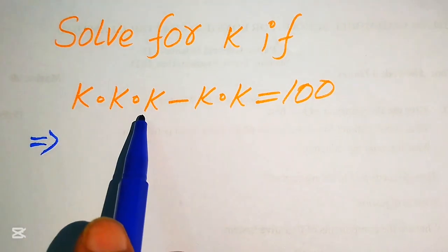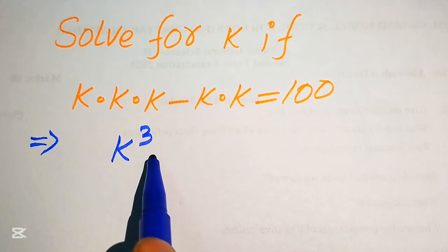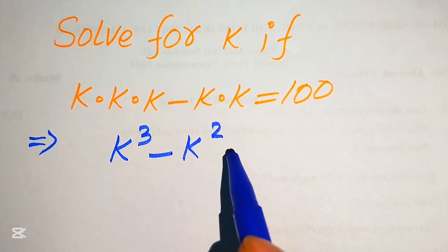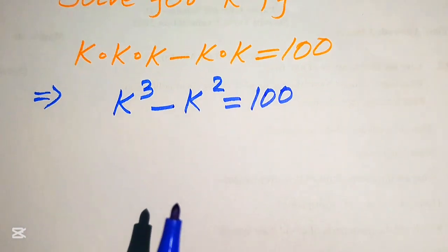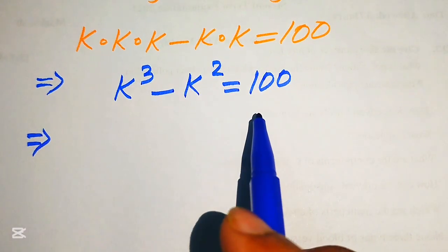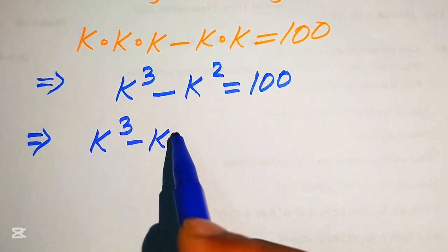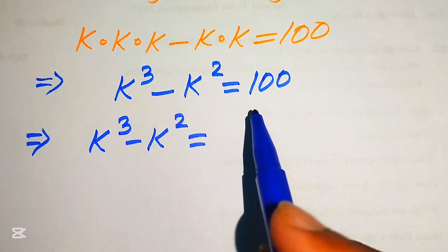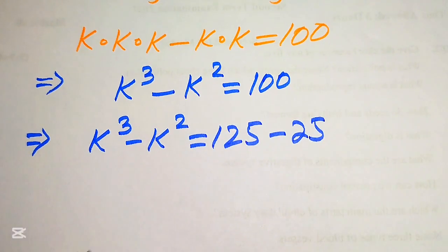We see that k is multiplied 3 times, so we write it as k cubed. Minus k is multiplied 2 times, so we write it as k squared, and it equals 100. Now we focus on the right-hand side: k cubed minus k squared equals 100, and we write 100 as 125 minus 25.